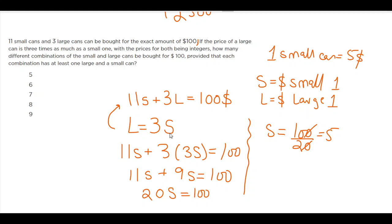And so if this is 5, the large can, one large can, is just going to be multiplied by 3, right? 5 times 3 is 15 dollars.